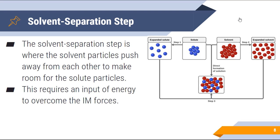The next step is the solvent separation step, which is where solvent particles push away from each other to make room for the solute particles. The solvent has to expand in order to make room for the solute. Now if this is water, this requires an input of energy to overcome the hydrogen bonding that's present between the water molecules. That has to break and separate in order for the solute to be able to fit in between the solvent molecules.